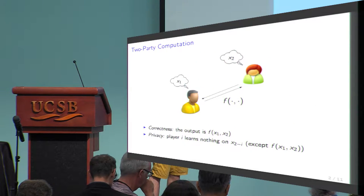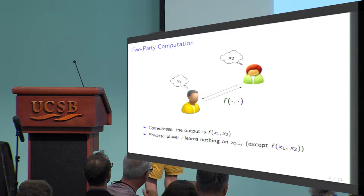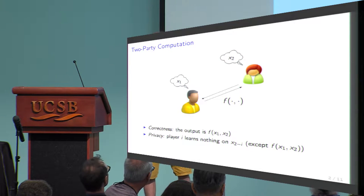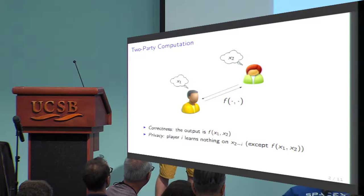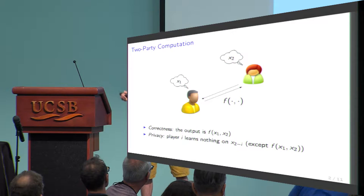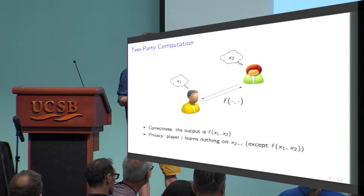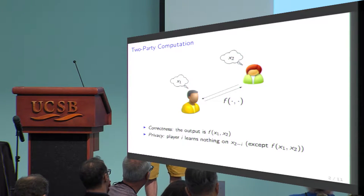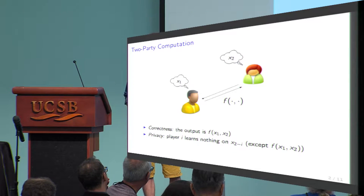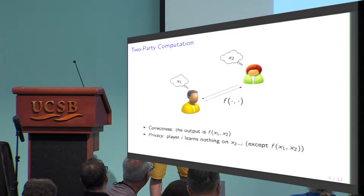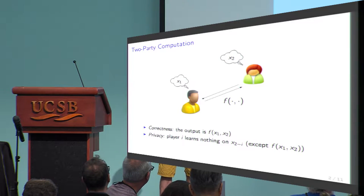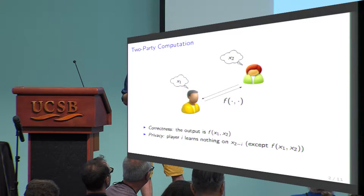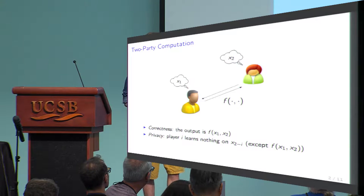Secure two-party computation addresses the challenge of computing some public function f. You have two players, Alice and Bob, who each hold some private input x1 and x2, and they would like to compute f on those inputs without revealing anything more than this result. In particular, they don't want to reveal anything at all about their own input.